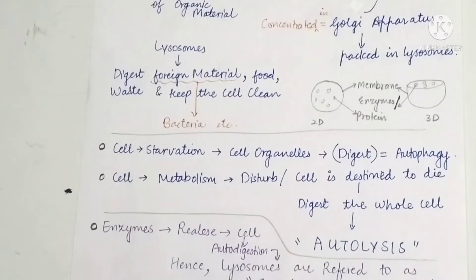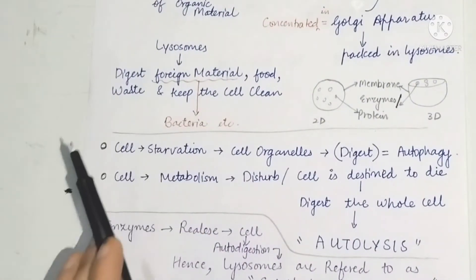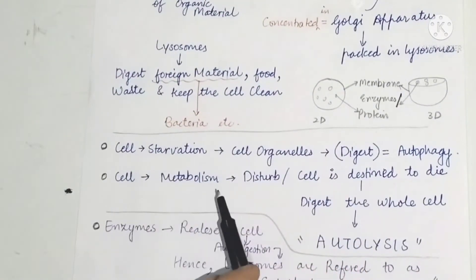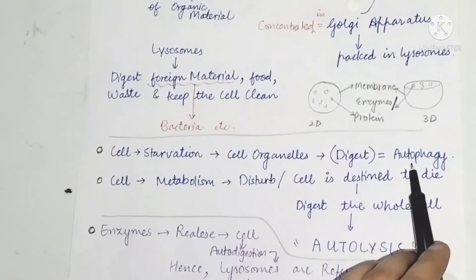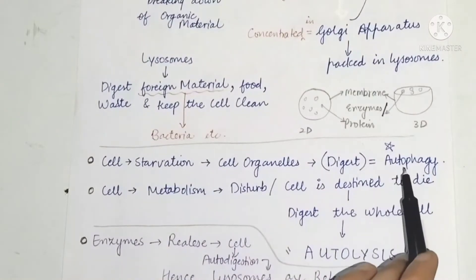When food is reduced in the cells, you need more energy. During starvation, when food is reduced, lysosomes digest the cell's own organelles to provide energy. And that condition is called autophagy. This term is very important — it also appears in MCQ-type questions.